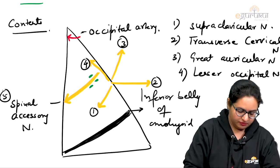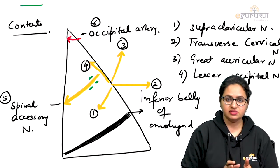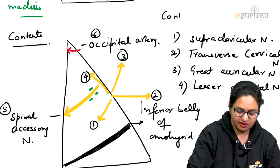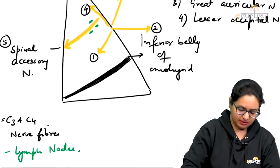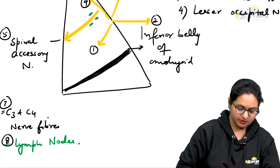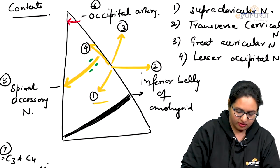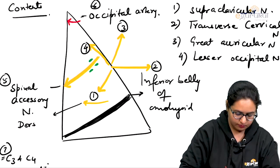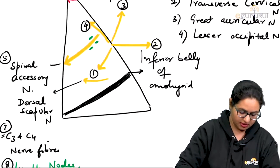We can label it: 5 — spinal accessory nerve, 6 — occipital artery. All these structures are present in the occipital subdivision of the posterior triangle. These are contents 1 to 6, then the 7th and 8th. Apart from these, towards the lower part of the triangle, we have a nerve which is a branch of the brachial plexus — the dorsal scapular nerve, which is the 9th content.